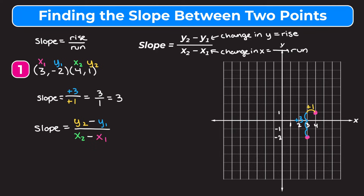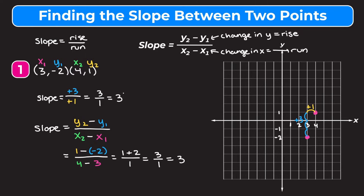Plugging in our values: y2 is 1, minus y1 of -2, so we have 1 minus (-2) on top. On the bottom, x2 is 4 minus x1 of 3. Simplifying: 1 minus (-2) is the same as 1 plus 2, and 4 minus 3 is 1. So we get 3 over 1, which equals 3 — the same slope we got from the graph.